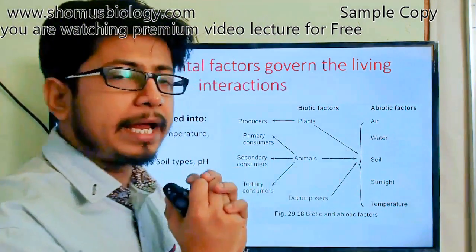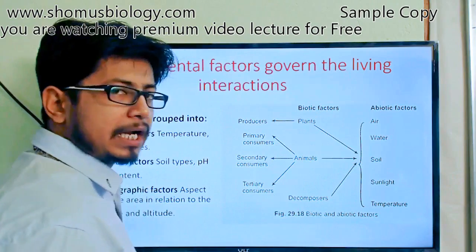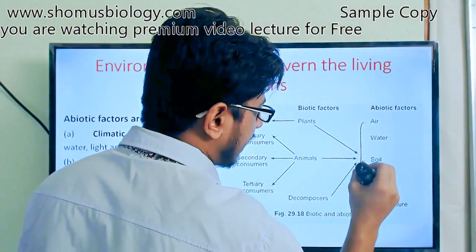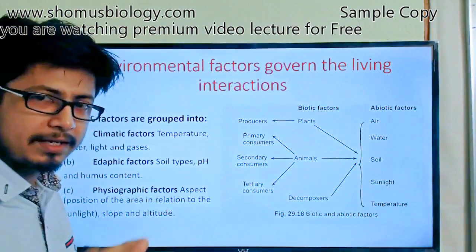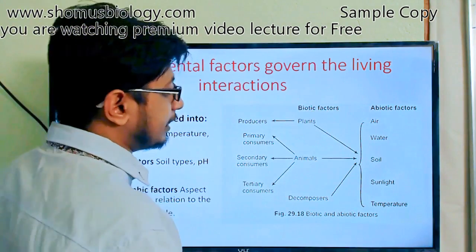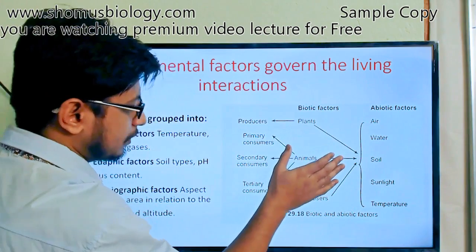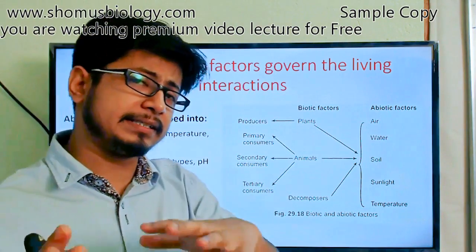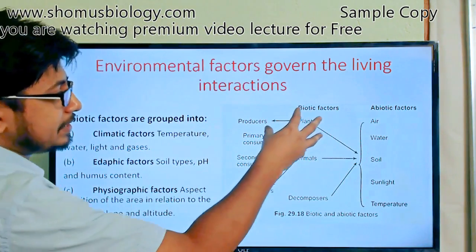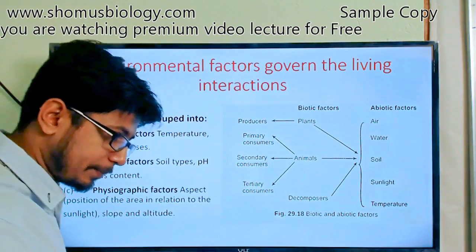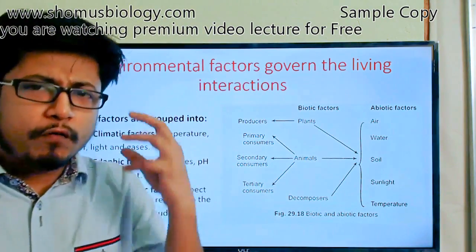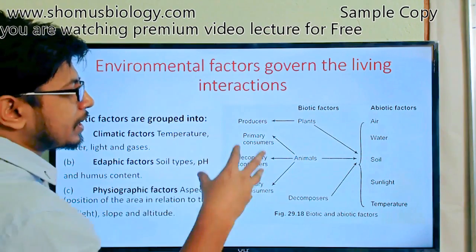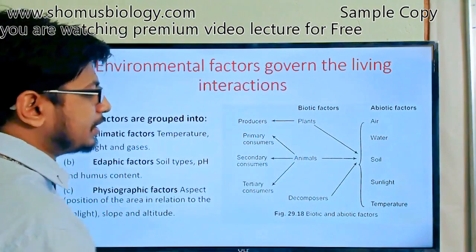Ecosystems have two components: biotic factors (living things) and abiotic factors (non-living things like air, water, soil, sunlight, and temperature). Among biotic factors, plants serve as producers — they produce food for animals and decomposers alike.